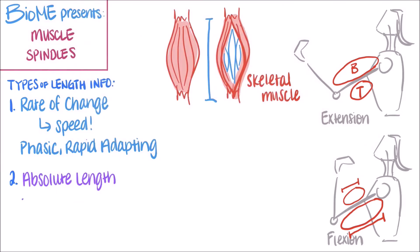For absolute length, you have tonic, slow adapting receptors. These receptors adapt slowly, so they will keep firing action potentials at a high rate even when the stimulus has been constant for some time. The more the muscle is stretched, the greater its rate of firing action potentials. If you want to learn more about the differences between tonic and phasic receptors, you can check out my other video where I go more in depth about how they differ in firing action potentials.